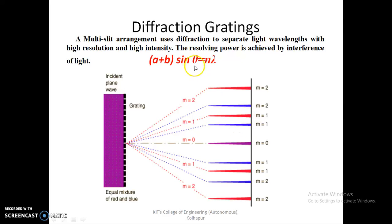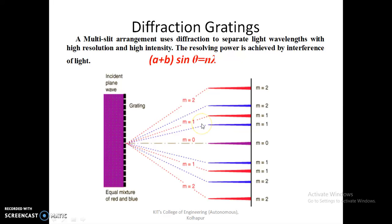According to this equation, (a + b) is the grating element — the distance between two slits — and this distance is constant, so (a + b) is constant. For first order, where n = 1, θ is directly proportional to λ. So (a + b) sin θ = nλ is the equation for the condition for bright maxima.